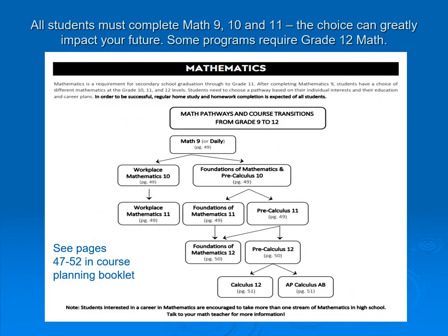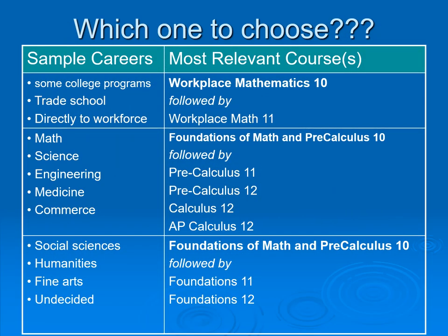All students must complete math at the Grade 9, 10, and 11 level. The choices can greatly impact your future, and some programs also require students take Grade 12 math. Which math to choose will depend on your future career. Please make sure you are taking the time to investigate what the different pathways will lead you to and which programs require specific math classes. You want to make sure you are planning in advance.